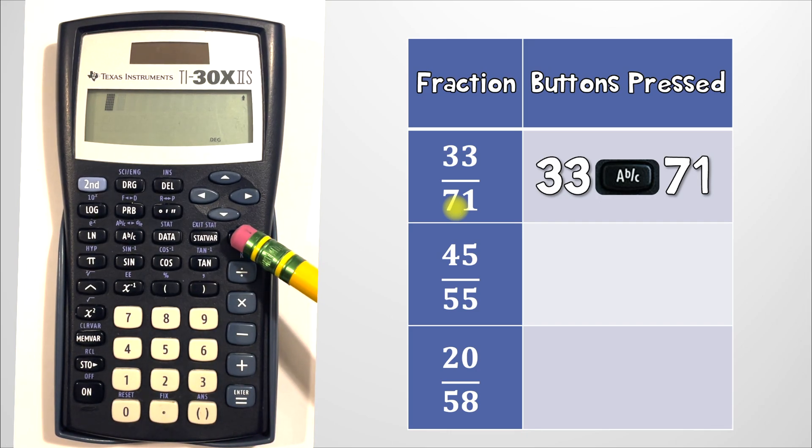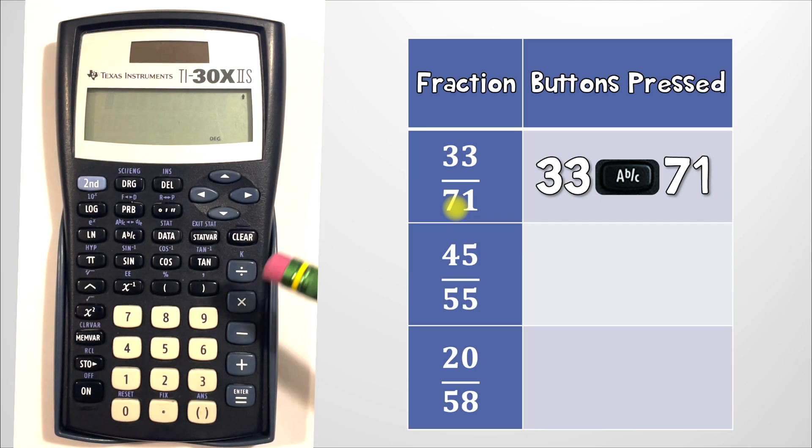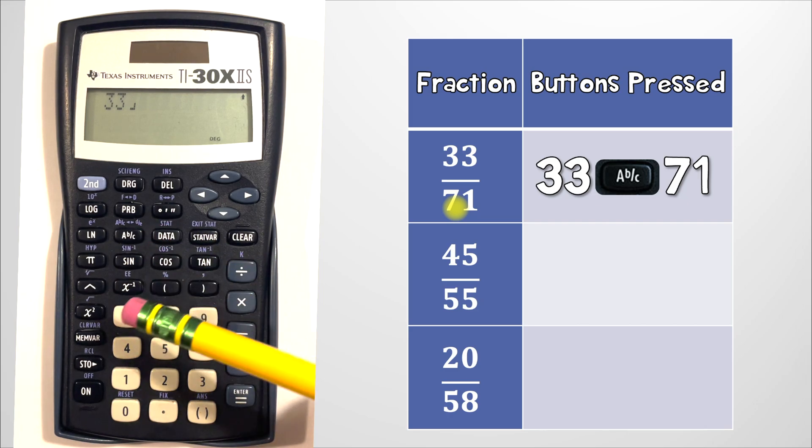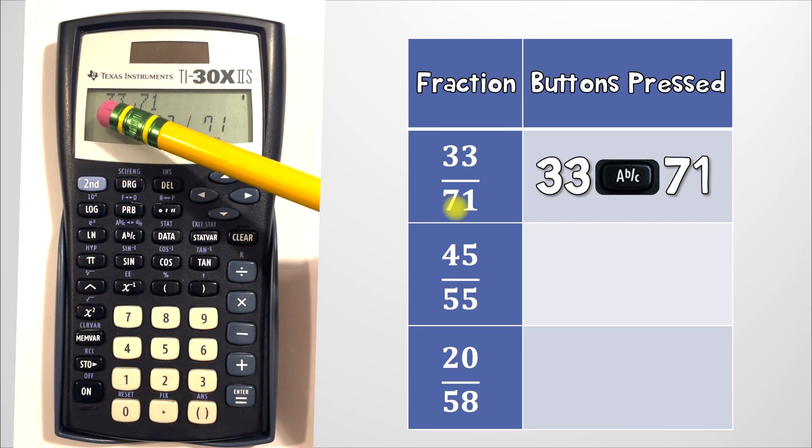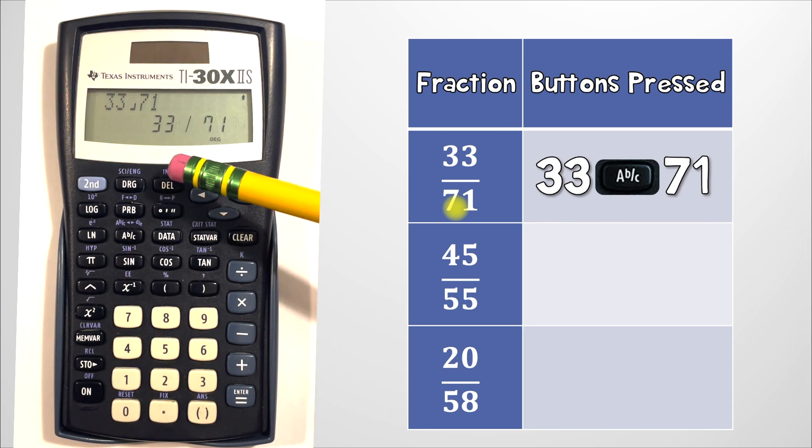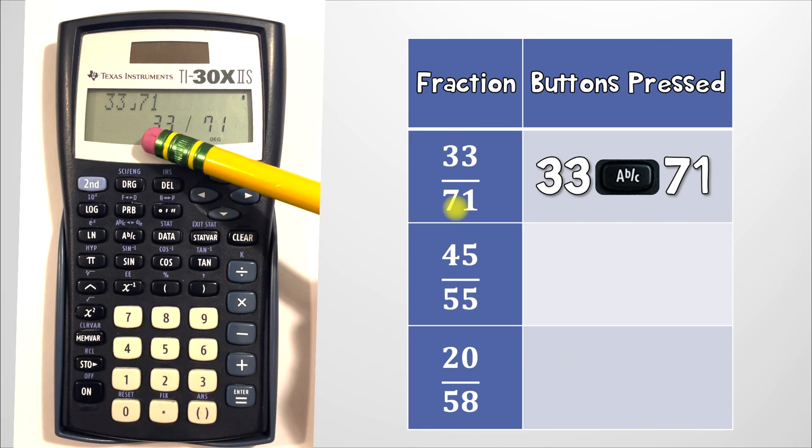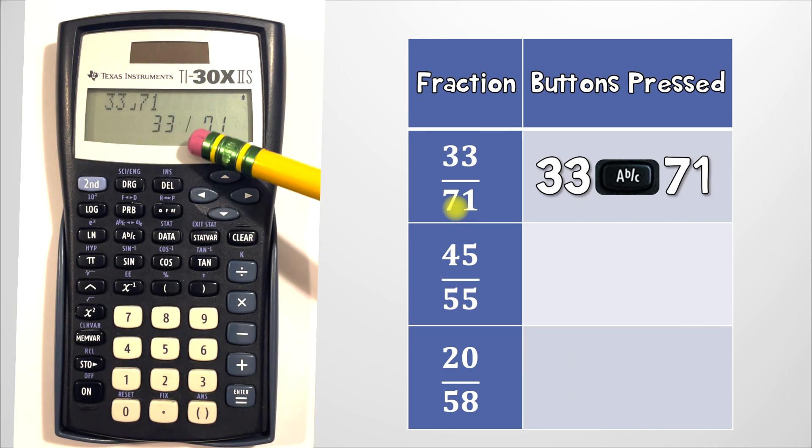33, ABC, 71 and enter. So remember even though the calculator writes 33 bracket 71, that's just how it represents the fraction 33 over 71.